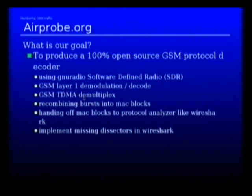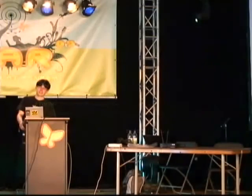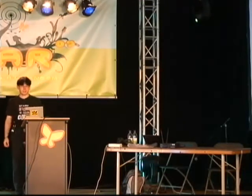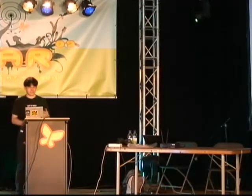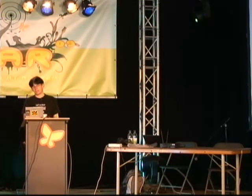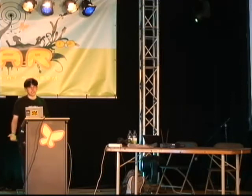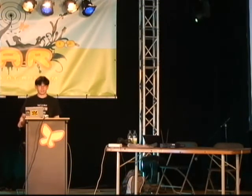You do the layer-1 demultiplex, demodulation, decode, the TDMA demultiplex, recombining the bursts into MAC blocks, and so on — all the low-level parts of the RF protocol — and then handing off the layer-2 MAC blocks into a protocol analyzer like Wireshark or other protocol analyzers that you might write or have.